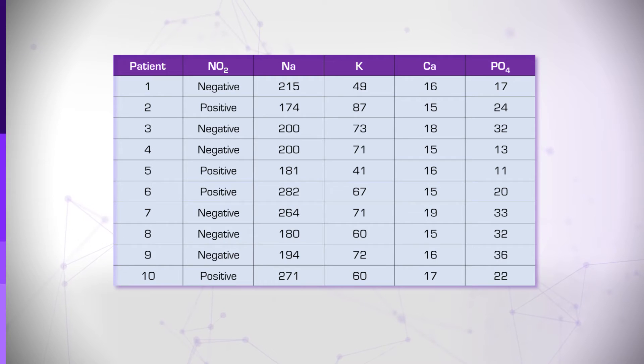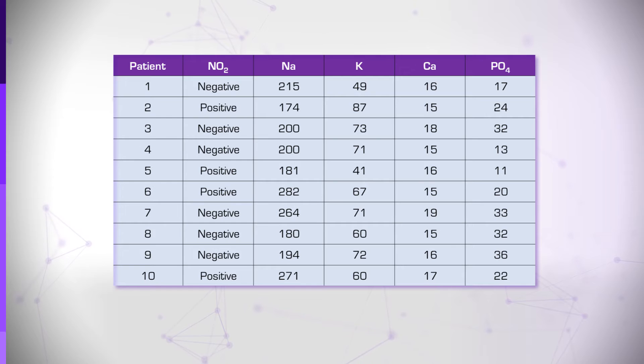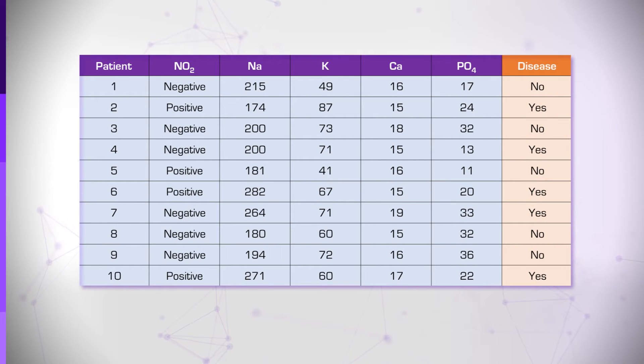Assuming our database stores 10 patients with 5 variables of a urinalysis, nitrite, sodium, potassium, calcium, and phosphate. Let's assume 5 patients have a kidney disease and 5 don't.